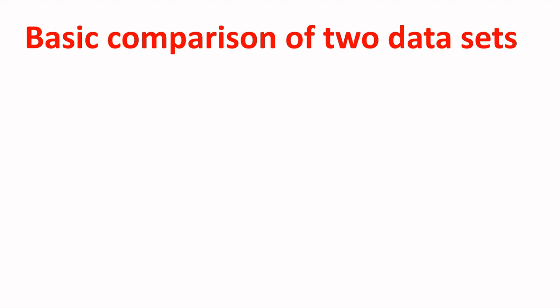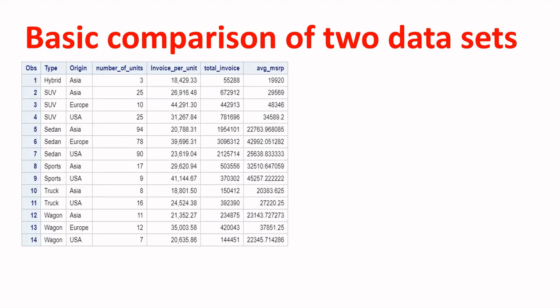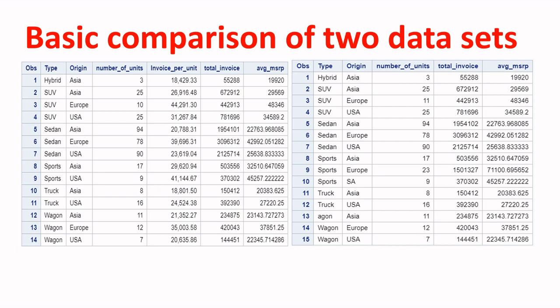The first thing we are going to learn today is basic comparison of two data sets. We have one table called CARS_SUMMARY which has 14 observations and 6 variables. The second data set is CARS_SUMMARY2, which has 15 observations and 5 variables. The differences include: the first table has 14 observations vs 15 in the second; the first table has an extra variable 'invoice per unit' not available in the second; and for the third observation, number of units is 10 in the first table but 11 in the second.